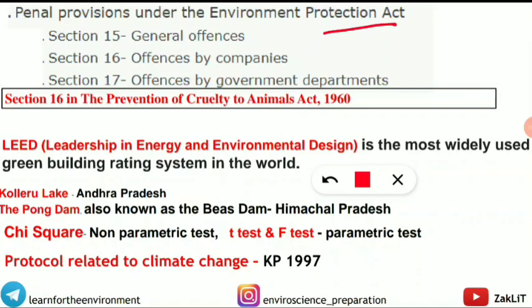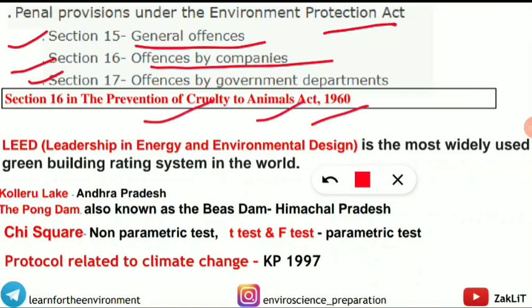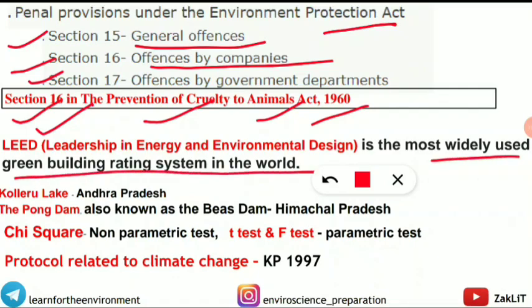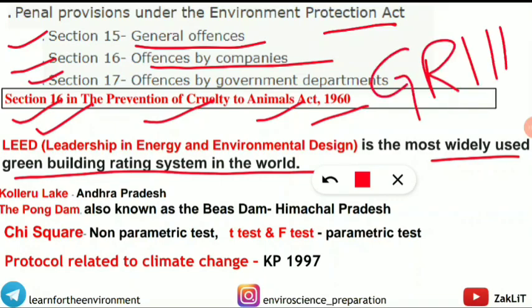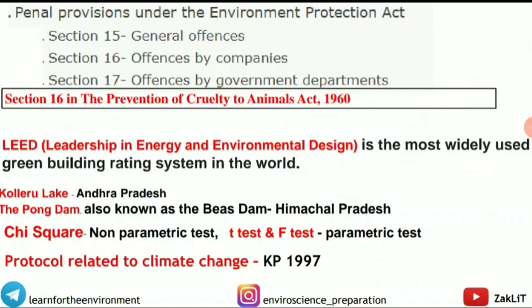Penal provisions under the Environment Protection Act: Section 15 covers general offences, Section 16 covers offences by companies, Section 17 covers offences by government departments. However, many students reported the question was about the Prevention of Cruelty to Animals Act 1960, for which Section 16 would be the correct option. Also frequently asked: LEED stands for Leadership in Energy and Environmental Design — the most widely used green building rating system in the world.